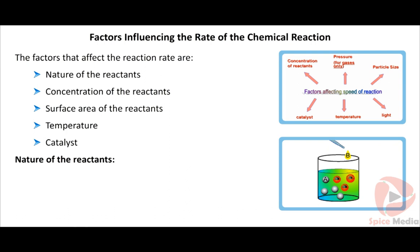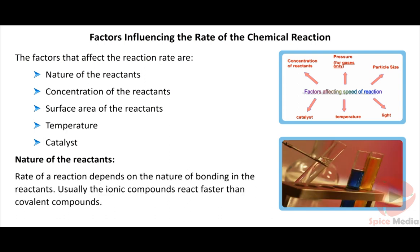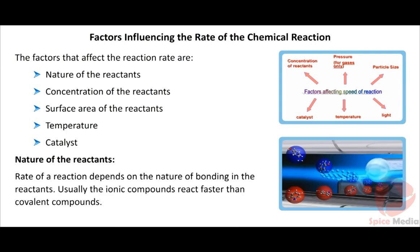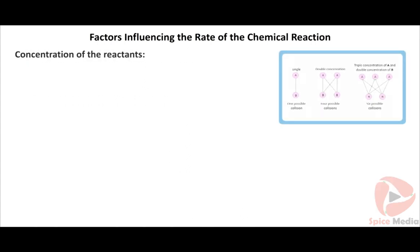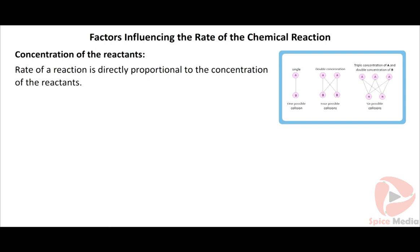Nature of the reactants: The rate of a reaction depends on the nature of bonding in the reactants. Usually, ionic compounds react faster than covalent compounds. Concentration of the reactants: The rate of reaction is directly proportional to the concentration of the reactants.